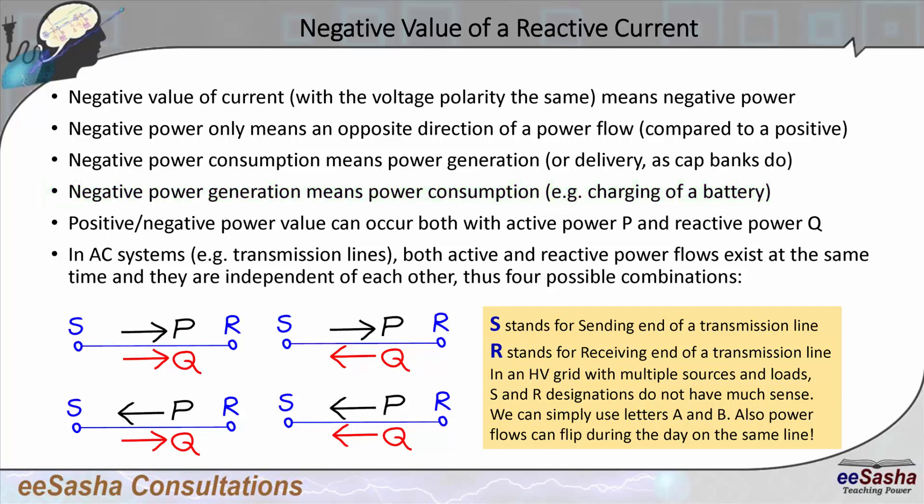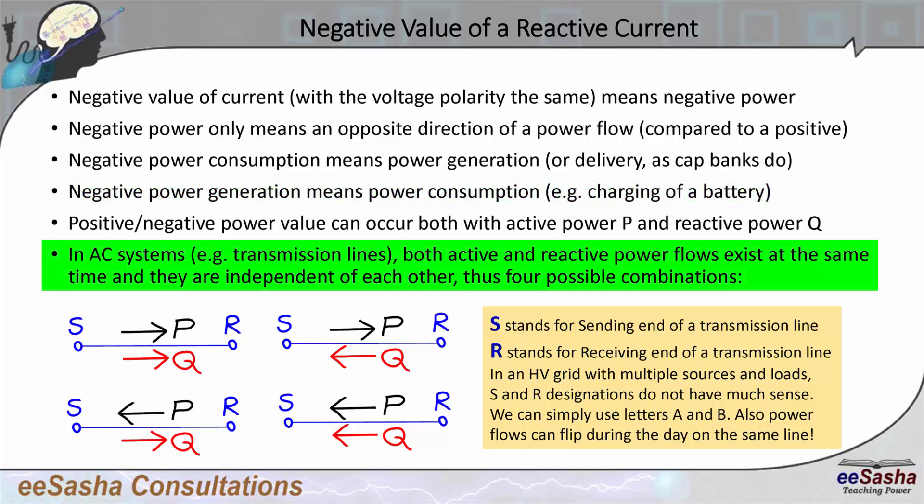Normally on a transmission line, at least in an AC system, you have active and reactive power flows. Both positive and negative power flow can occur with P just the same as with Q.